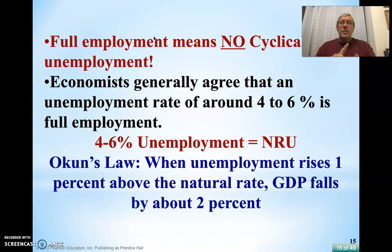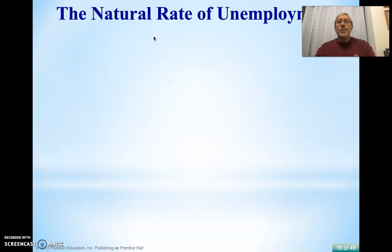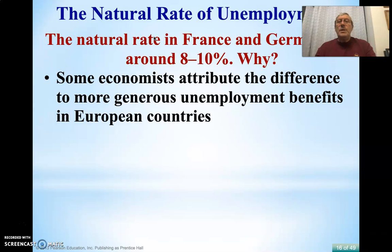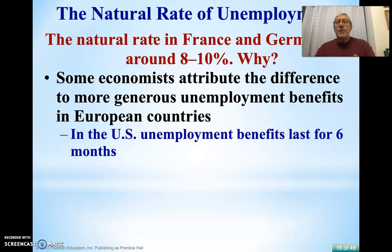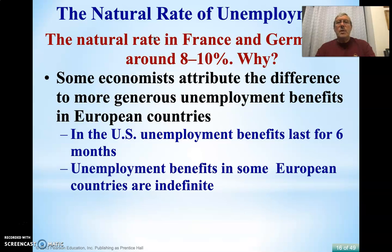Keep in mind the relationship between GDP and unemployment: when unemployment goes up 1% above the natural rate, GDP falls about 2% — a 1-to-2 relationship. Why would it be different in different countries? There are better unemployment benefits in France and Germany, so it's much more acceptable for people to be out of work there. Our unemployment benefits have fluctuated — the pandemic increased them to around 18 months, but generally they are 6 to 8 months depending on the situation. Unemployment benefits determine who can afford to stay out of work.